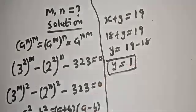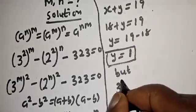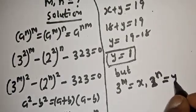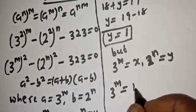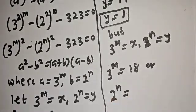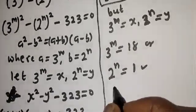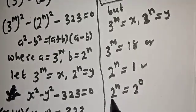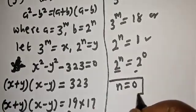This is the value of y. Recall that 3 raised to power m equals s and 2 raised to power n equals y. So 3 raised to power m equals 18, and 2 raised to power n equals y equals 1. Since 2 raised to power 0 equals 1, we have the same base, therefore n is equal to 0.